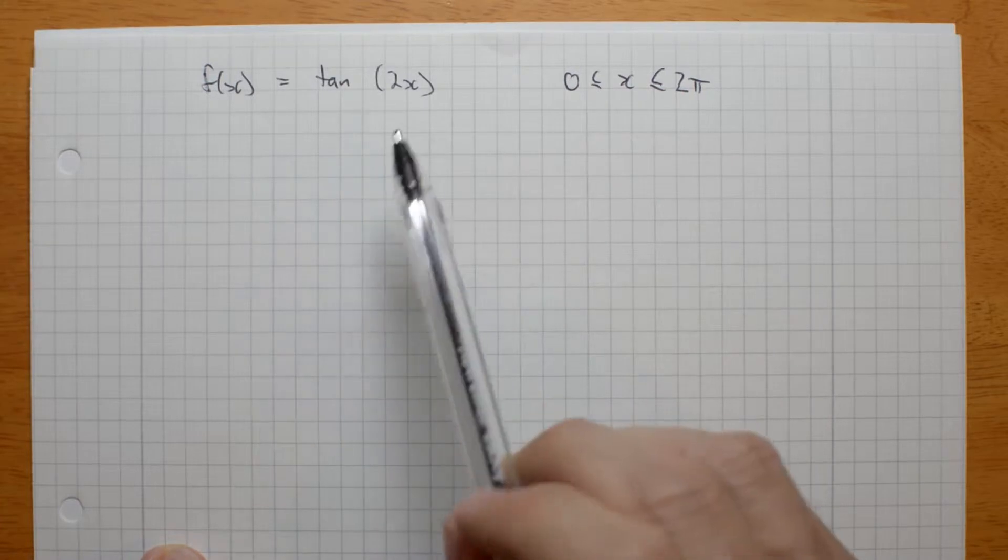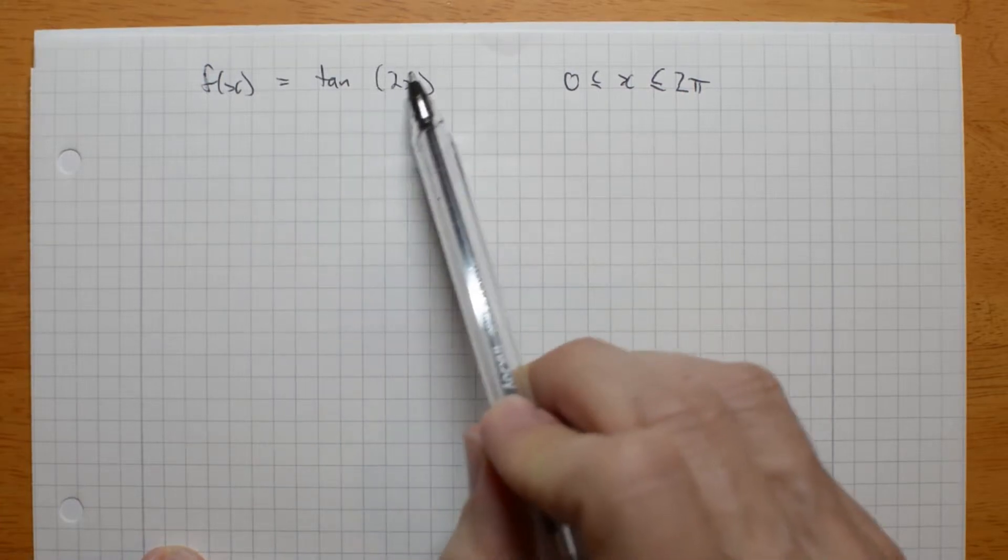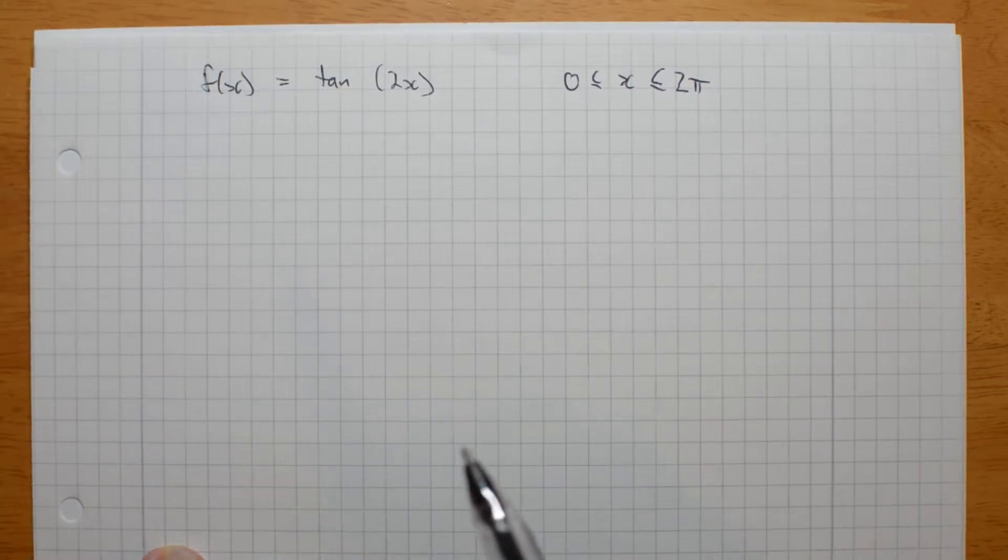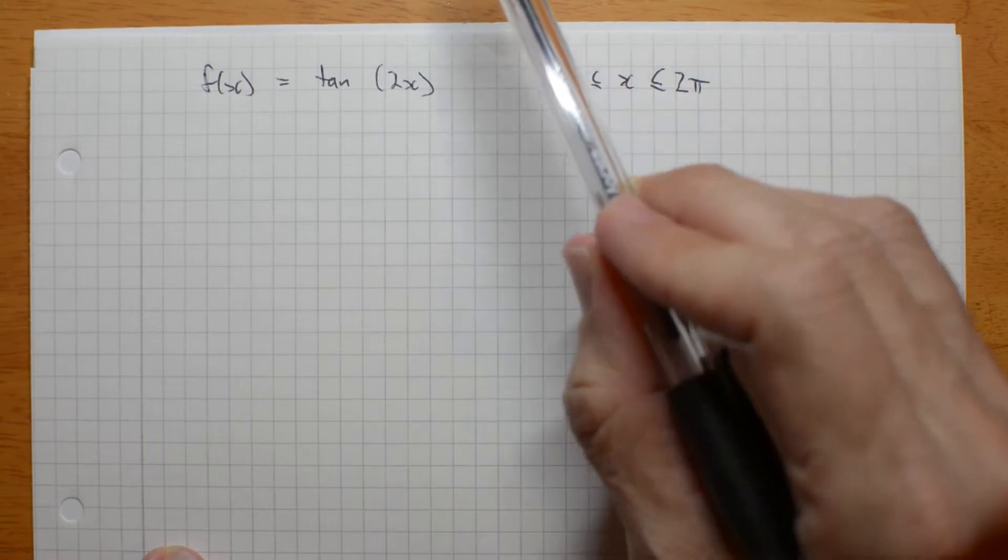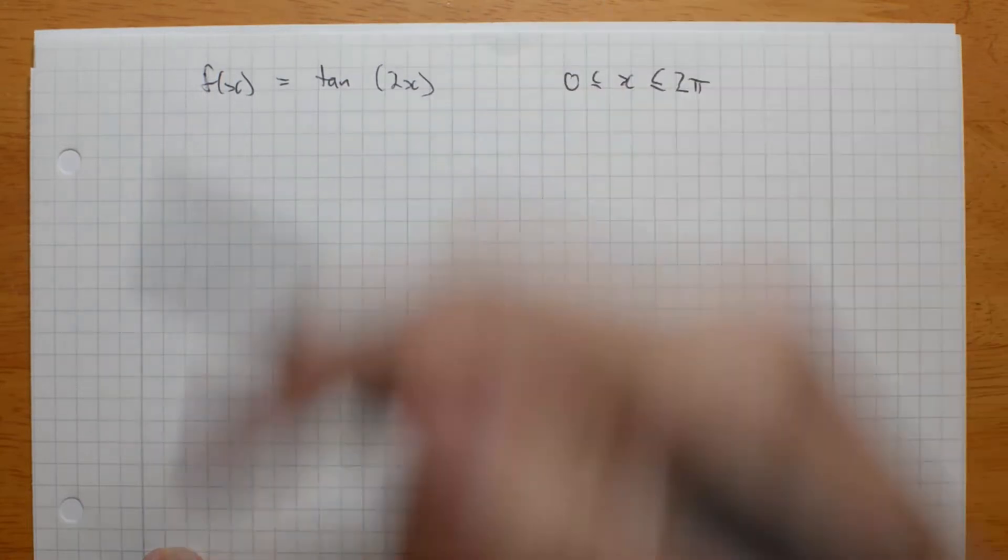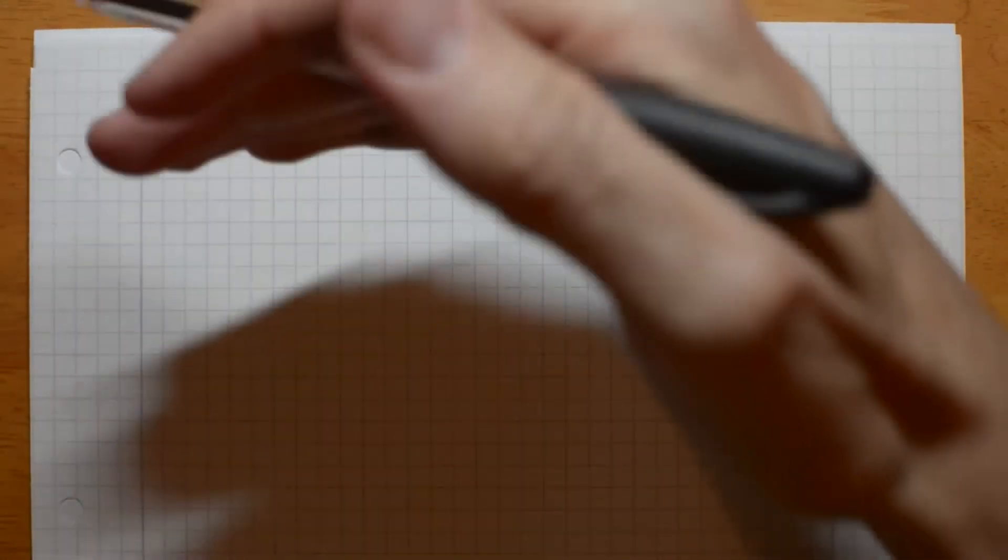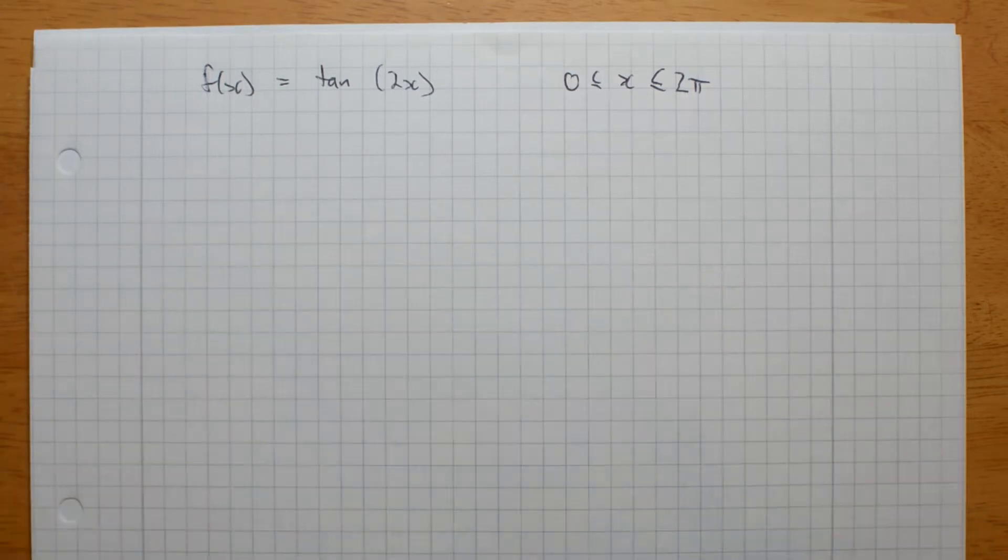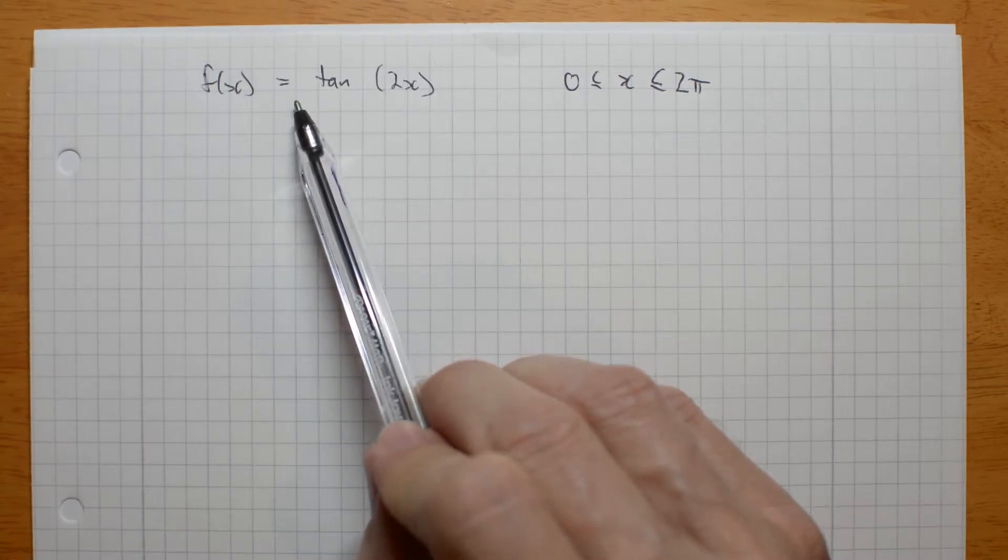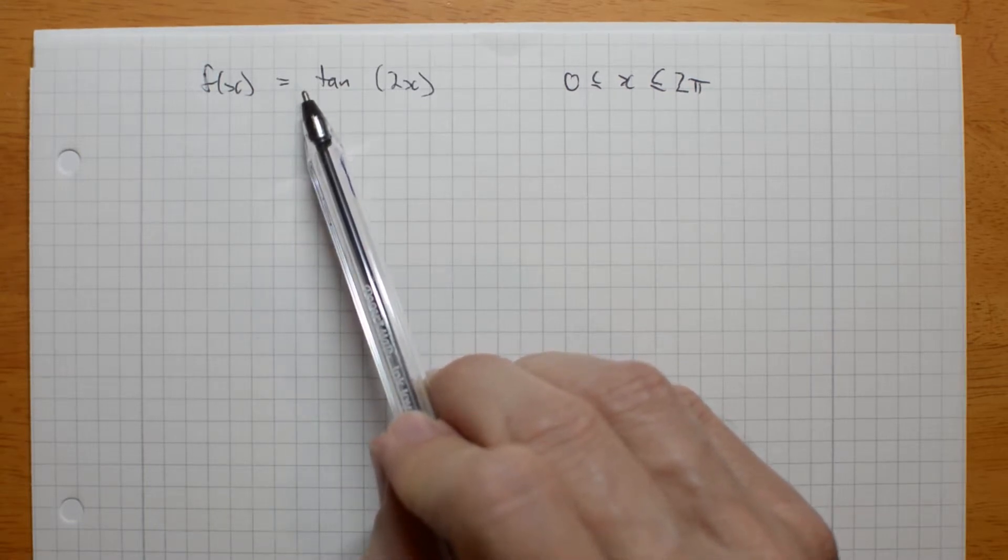So, if I'm graphing tan 2x, what are the transformations that are happening? I can't really talk about amplitude for tan, because it goes to infinity up and to infinity down. But nevertheless, it can be dilated either stretched vertically or compressed vertically. So I can still talk about that. Here, there's no number in front of my tan, so the vertical dilation hasn't changed.